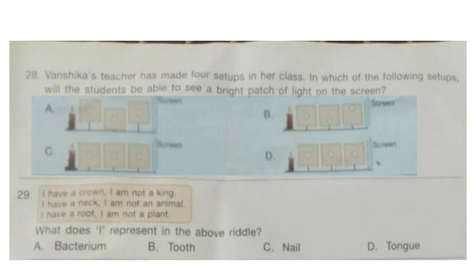Question 28. Shikha's teacher has made four setups in her class. In which of the following setups will the students be able to see a bright patch of light on the screen? Look at the options. The correct answer will be option D. All the holes are in the same line, so light will pass through straight and it will be the brightest of them all.